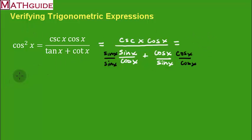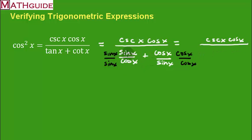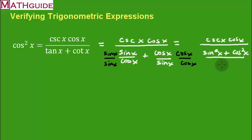Upon doing that, the numerator stays the same — cosecant x times cosine of x. The first fraction gives sine squared x and the second gives cosine squared x, and both have the common denominator sine x times cosine x. So I add the two numerators together and keep the common denominator of sine x times cosine x.